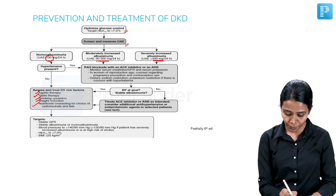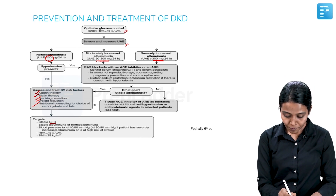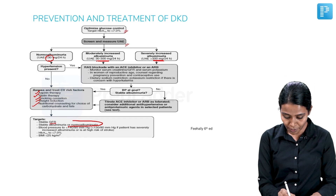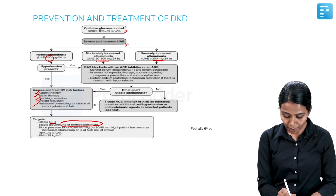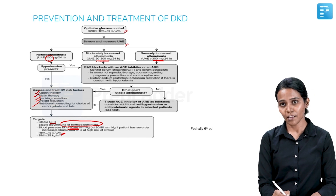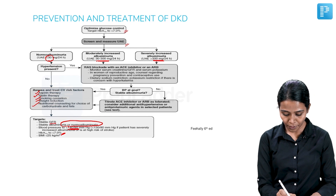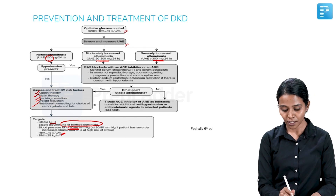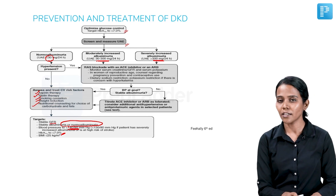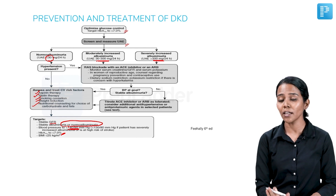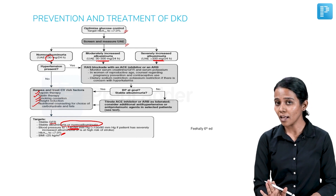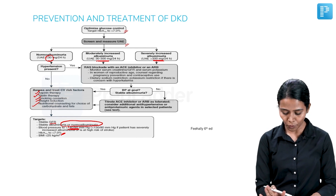The target is to keep stable GFR and to keep the patient with stable microalbuminuria or normal albuminuria. Blood pressure to be kept at less than 140/90, HbA1c less than 7, and to achieve weight loss so that BMI becomes less than 25. These are the targets to be achieved in a patient who is diabetic but has no proteinuria and no hypertension.